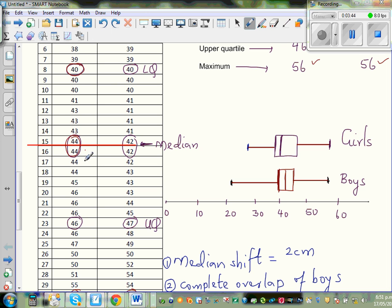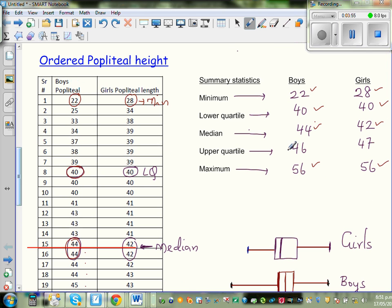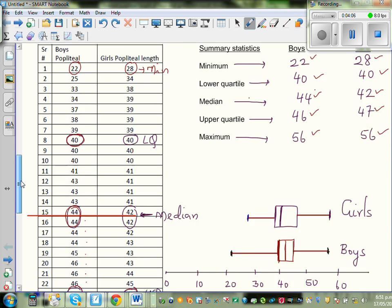And same way you find the middle of the upper half. So I'll count 1, 2, 3, 4, 5, 6, 7, 8. So this is your middle of the upper half which is 46 and 47. So this is how you locate the quartiles and the medians. It's not computation, it is location.